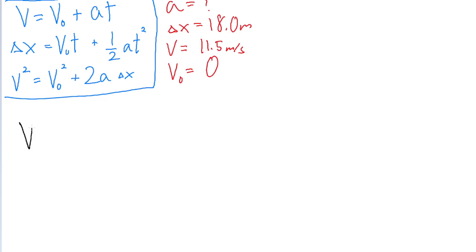So first things first, we subtract v naught squared from both sides of the equation. So v squared minus v naught squared equals 2a delta x, and we're trying to find the acceleration. So we can divide both sides of the equation by 2 delta x.